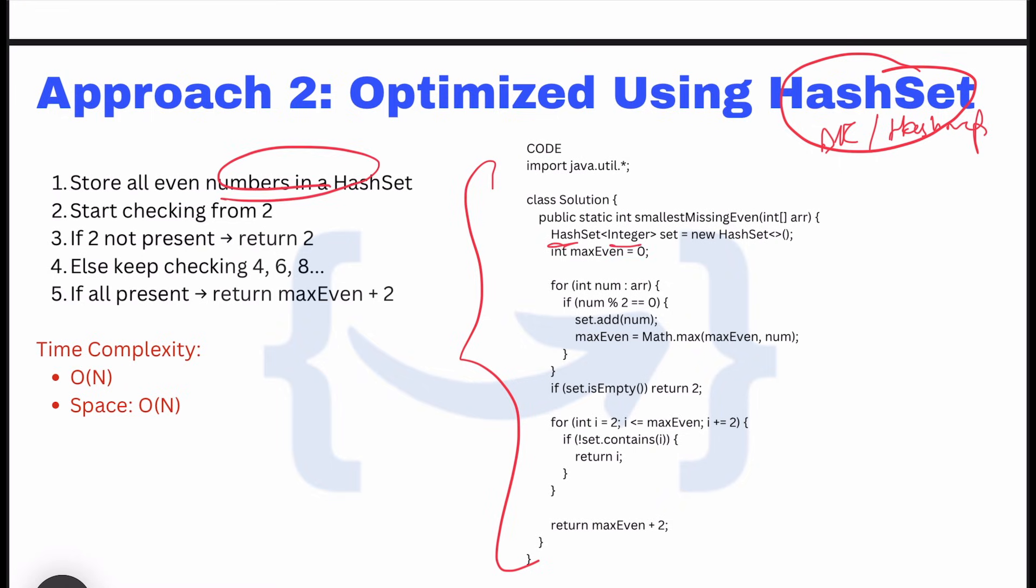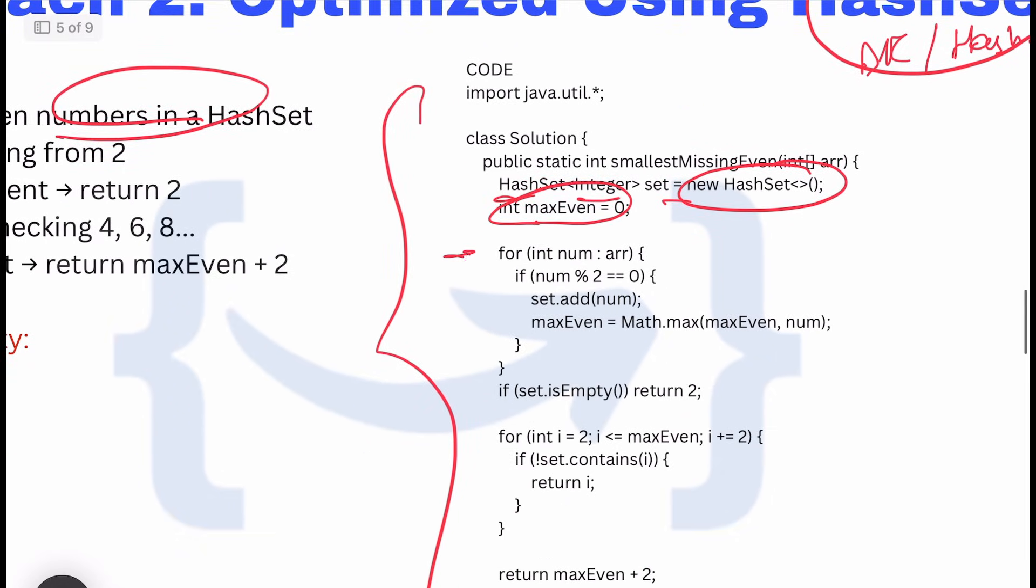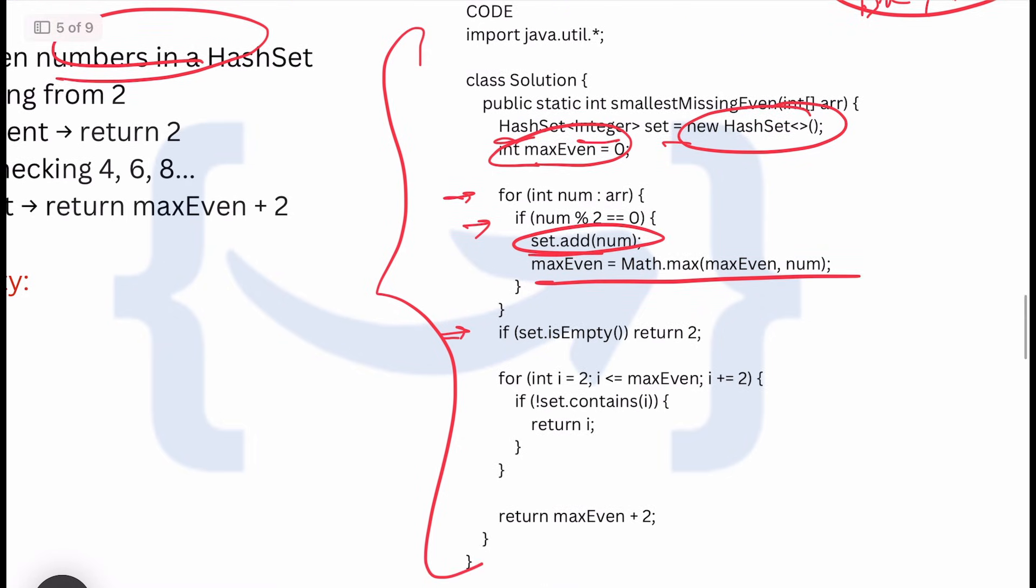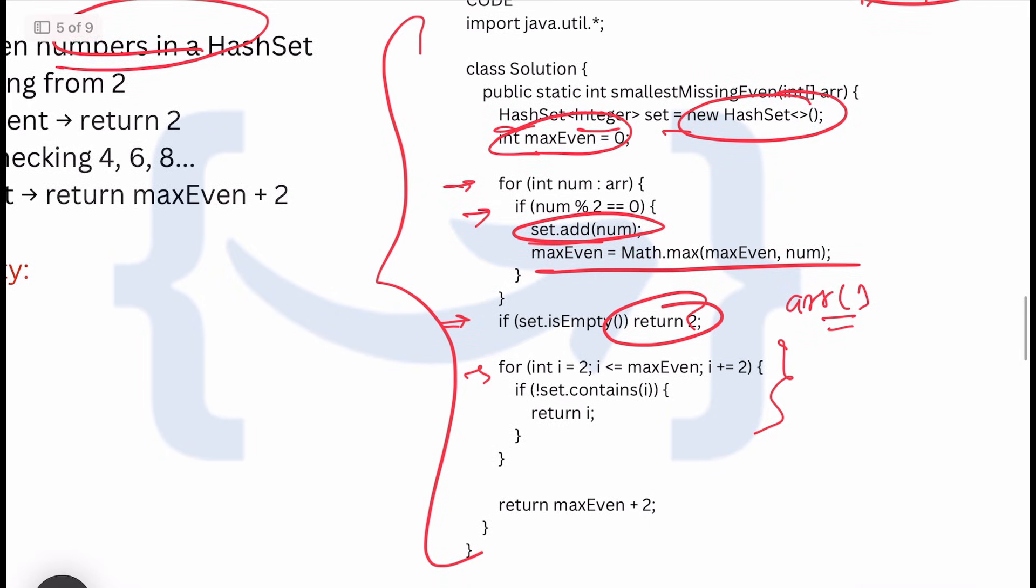Store all even numbers in HashSet: HashSet integer set = new HashSet. Then maxEven equals zero. For int array, if num mod 2 equals zero, then set.add, and track maxEven. If set is empty, return 2, which is the smallest even number. This is an edge case - if your input array doesn't have any even element, the smallest missing even number would be 2.